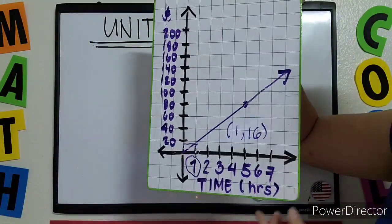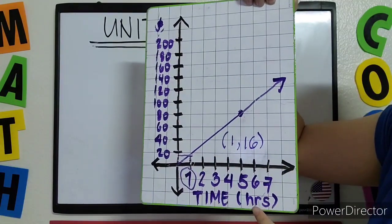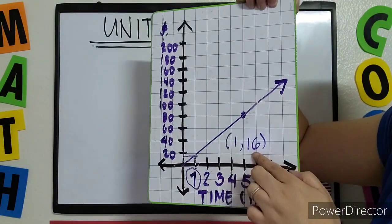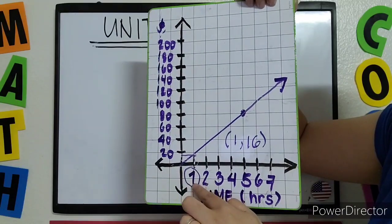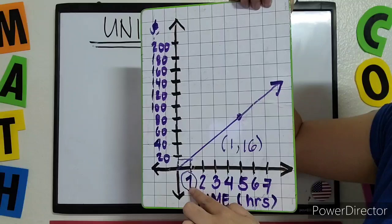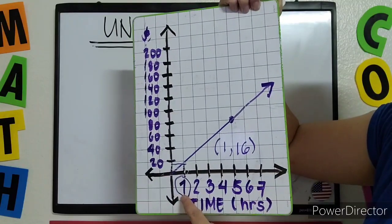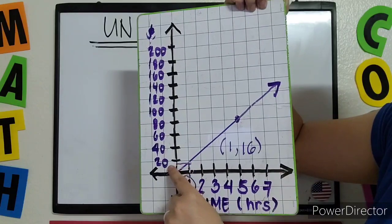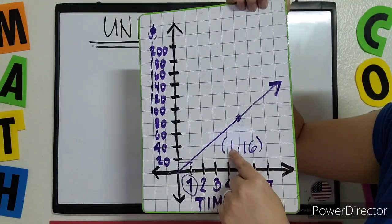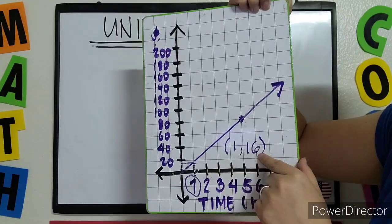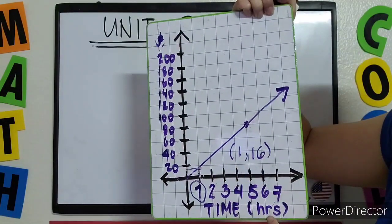The point is (1, 16). So the unit rate here is $16 per hour — that is Y over X, where Y is 16 and X is 1. When finding the unit rate from a graph, ignore all other points. Just find 1 on your X-axis and check its corresponding Y value. In this case, Y is 16, so the unit rate is $16 over 1 hour.